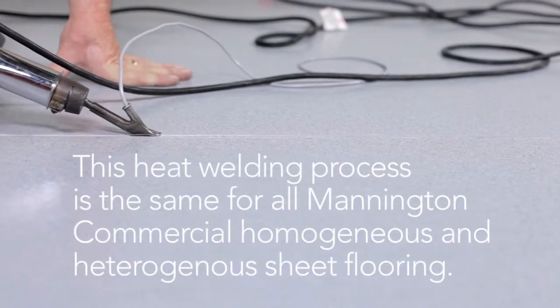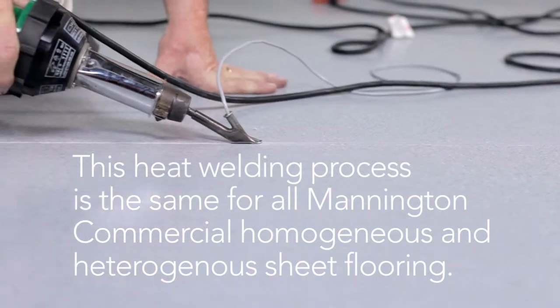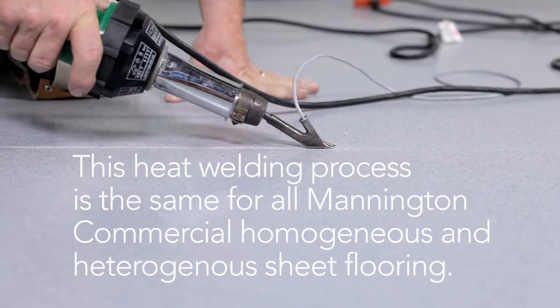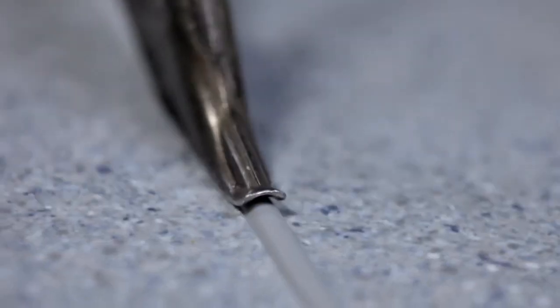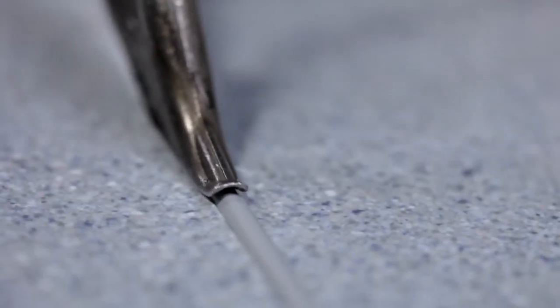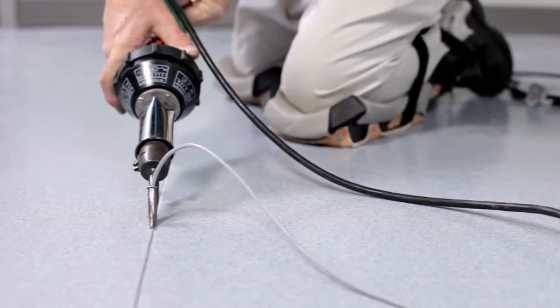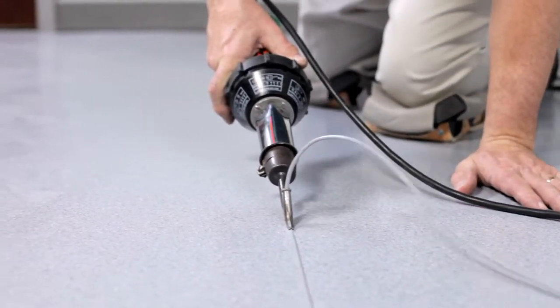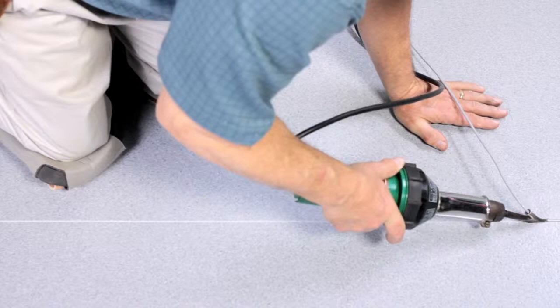This heat welding process is the same for all Mannington commercial, homogeneous, and heterogeneous sheet flooring. The weld rod will be melted into the groove by using a heat gun and a specialized nozzle. The heat gun will melt the seam edges and the weld rod to create a thermo weld, which fuses the sheets together.